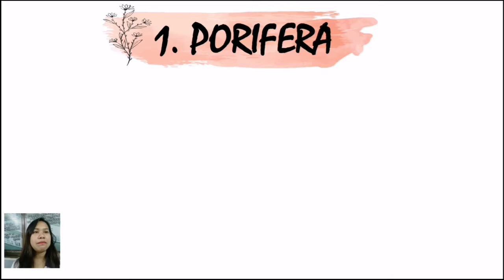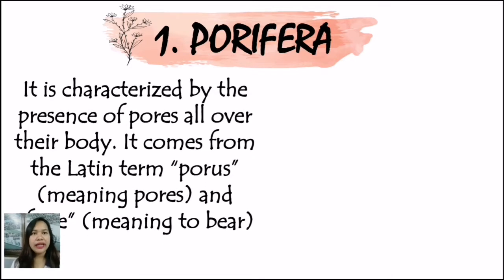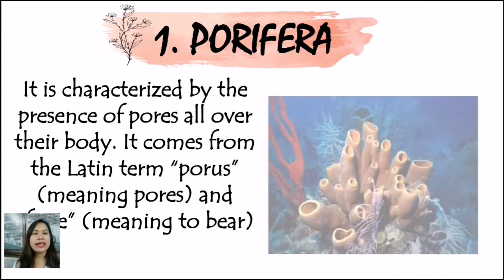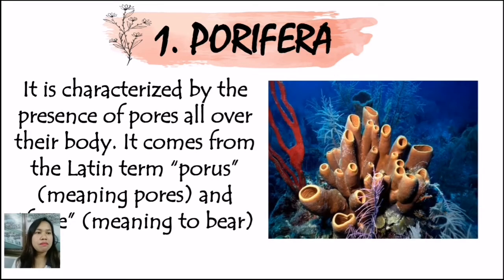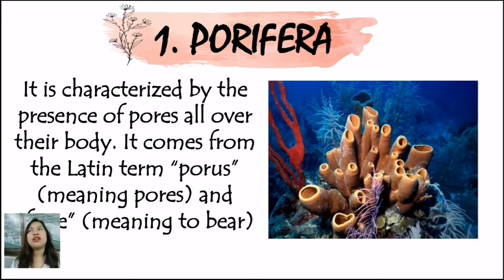To start with, phylum Porifera. When talking about the Porifera, it is characterized by the presence of pores all over their body. It comes from the Latin term porous, meaning pores, and the meaning to bear. An example of phylum Porifera is sponges. Basically, they do not have an organized body structure, but they are totally dependent on the water as they get nutrients from it.